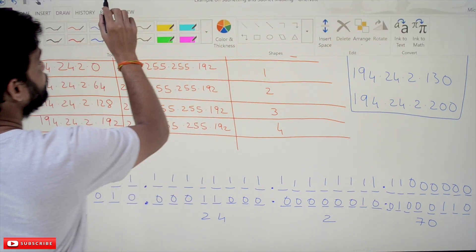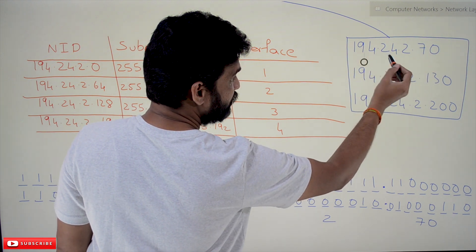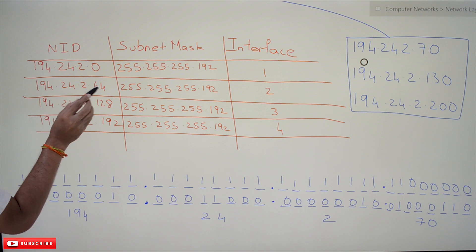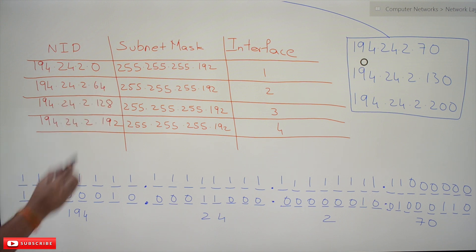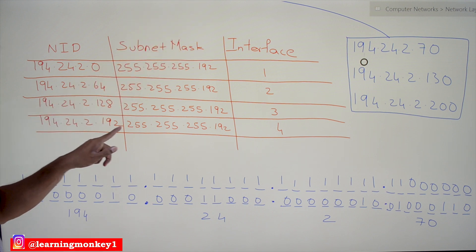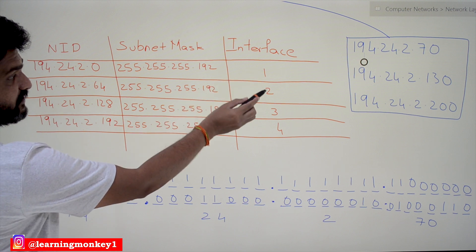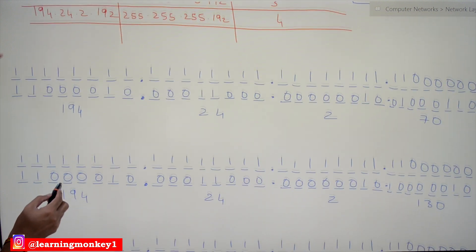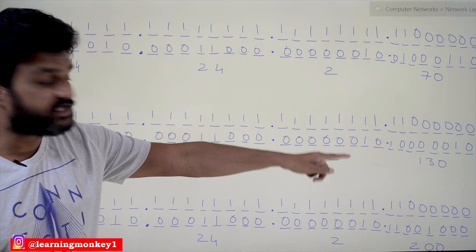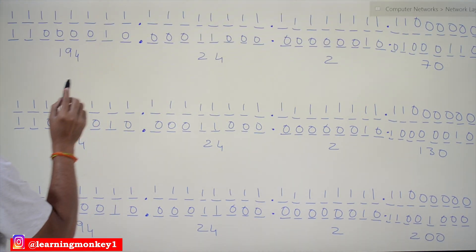So let's see — these are the three different messages that have arrived with these addresses: 194.24.2.70, 194.24.2.130, and 194.24.2.200. The value 70 belongs to the network whose range is 64 to 127. The value 130 belongs to the network with range 128 to 191. And 200 belongs to the network with range 192 to 255. Now, taking the first message, how can we identify the network ID? These are interfaces one, two, three, four as shown in the diagram.